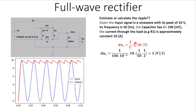We already know the capacitance and the load current. We choose the discharging process to calculate the ripple because we are given the current through the load rather than the charging current. In the discharging process the load current equals the capacitor current, so I_C = 10 A. For the time interval, the discharging process starts at the positive peak and ends near the negative peak of the sinusoidal signal.